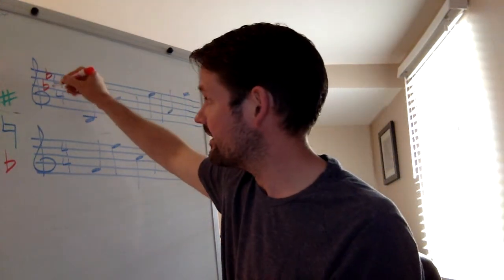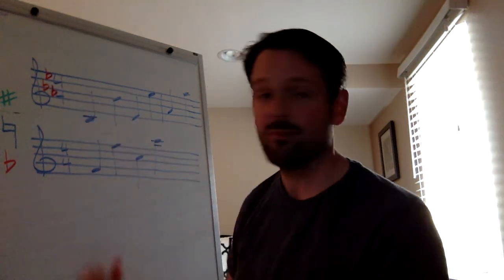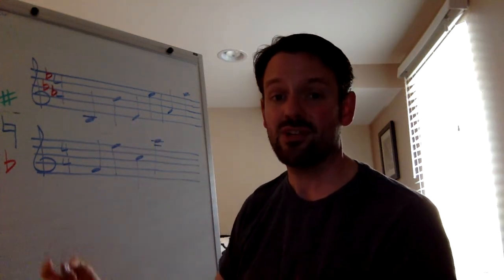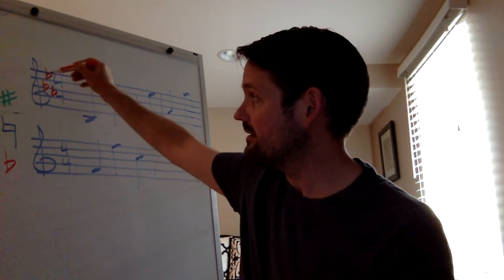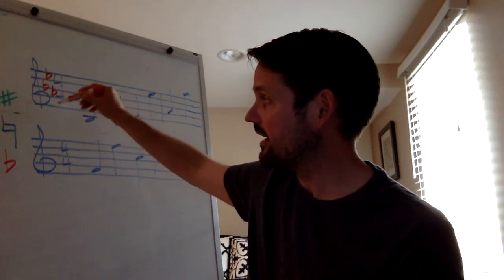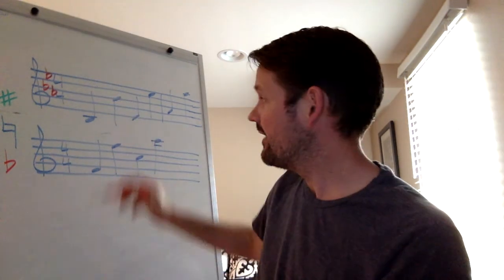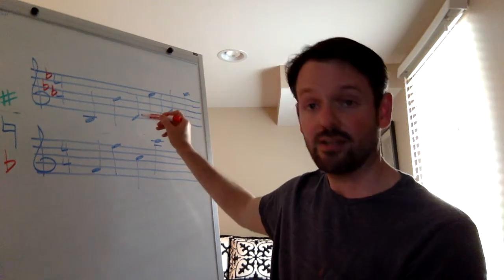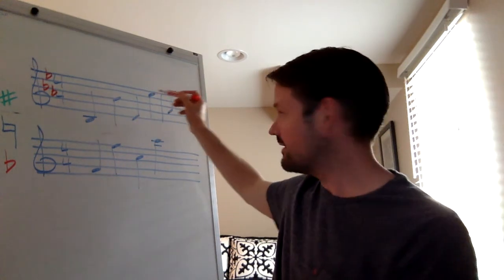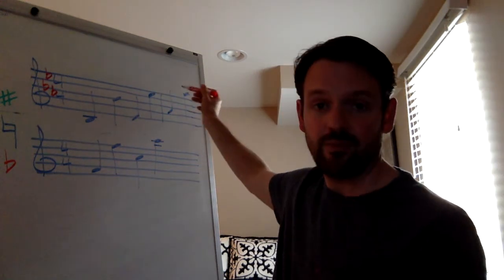If I put a third flat in the key signature, that means that all of your B's, all of your E's, and now all of your A's are going to be flat. So you're on the B line, the E space, and F, A, A flat is the third flat. That means that this is still B flat, B flat, E flat, still E flat, A flat, and then A flat.